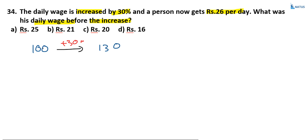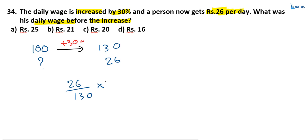Before increasing: 100; after increasing: 130. But after increasing, he gets 26 rupees. So, if after increasing the person gets 130 then before increasing it was 100. According to this question, after increasing he gets 26 rupees, so before increasing the amount is 26 by 130 into 100. That zero gets cancelled and this equals 20 rupees. The answer is Option C.